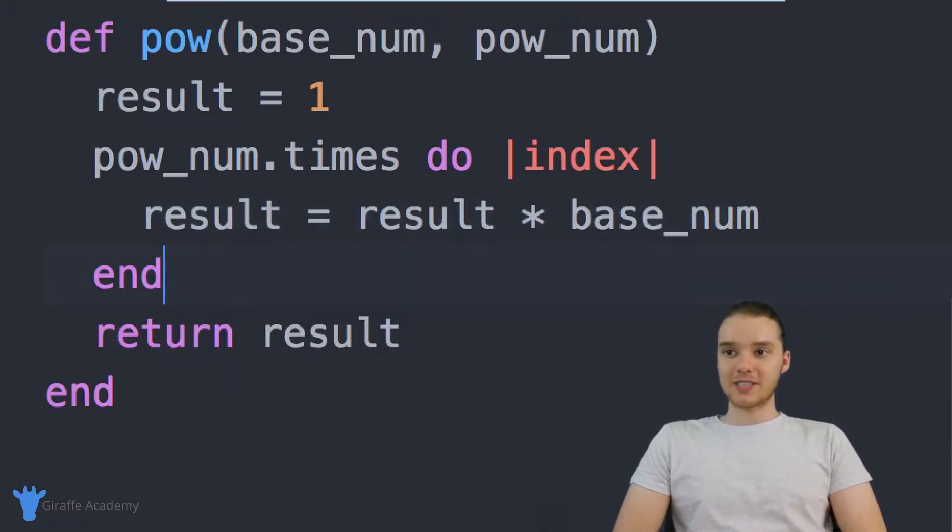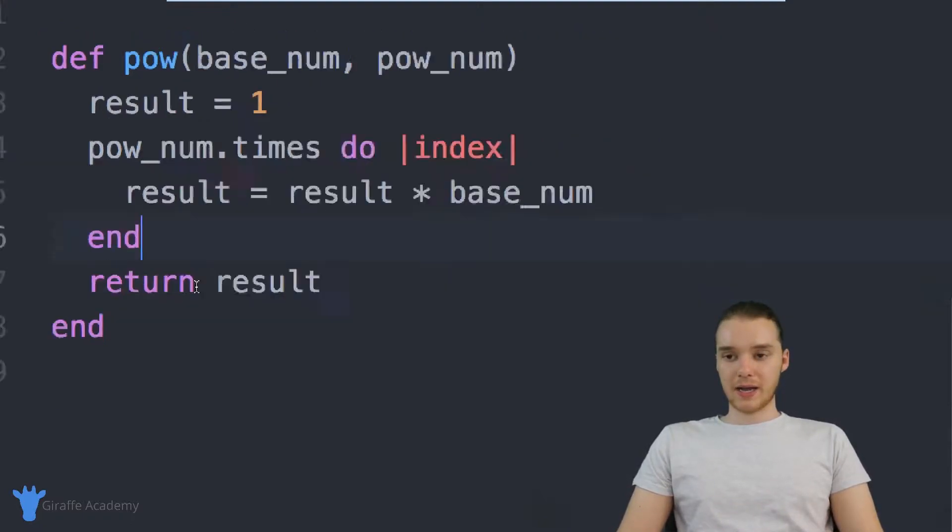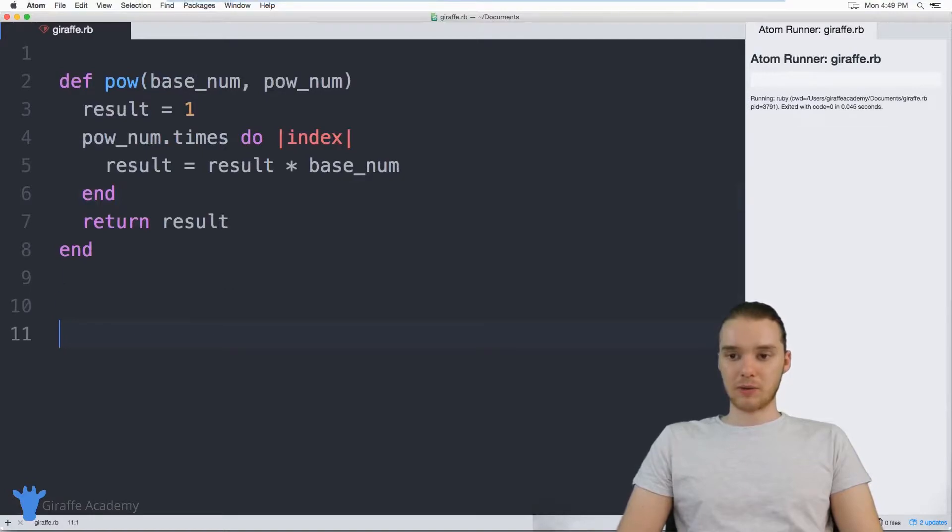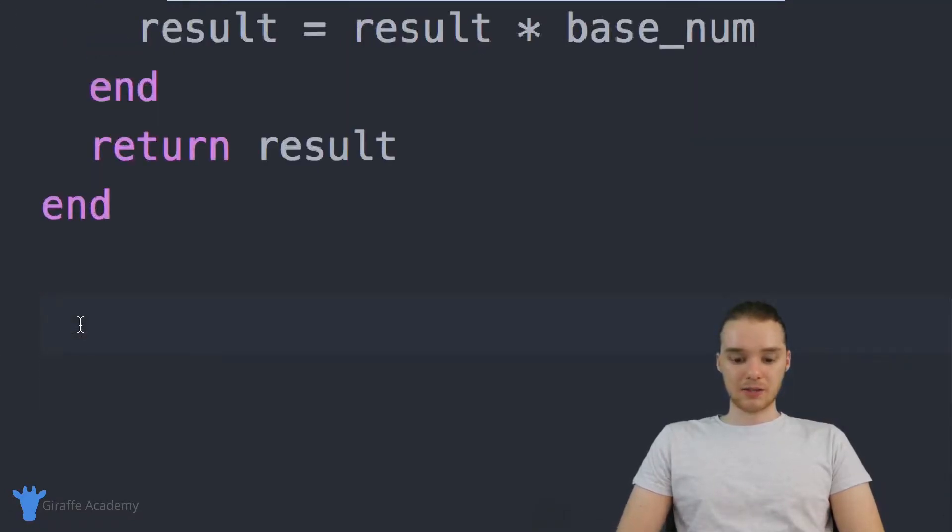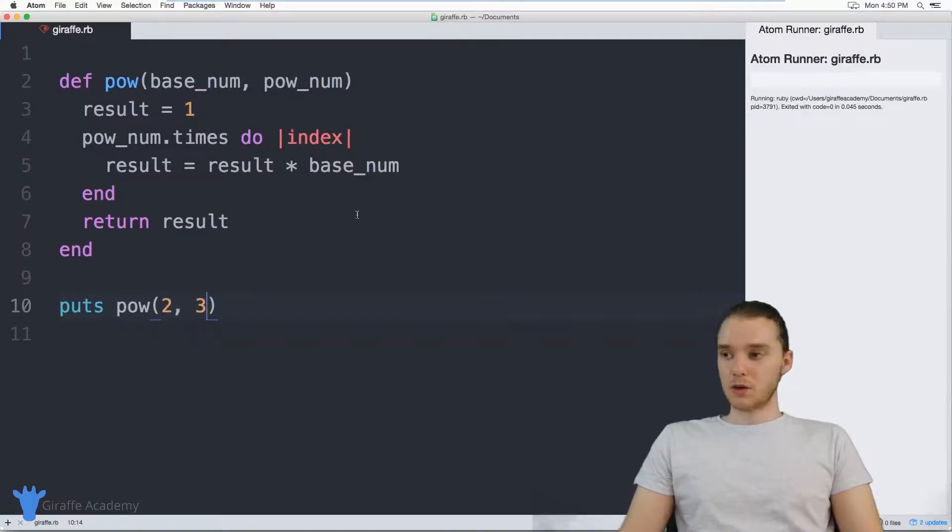So believe it or not, this is actually all we need for this method to work. So let's go ahead and call this method and we'll see what we get. So down here, I'm actually just going to print this out. So I'll just print out pow. And why don't we take two to the third power. Okay, so let's run this. And you can see over here, we get eight. So two cubed is eight.